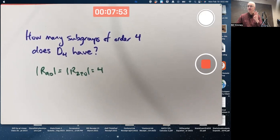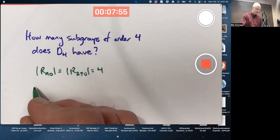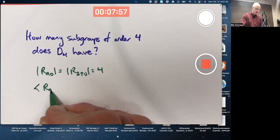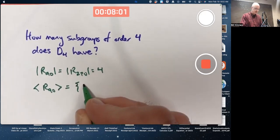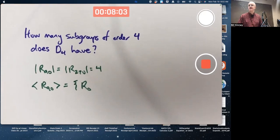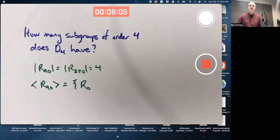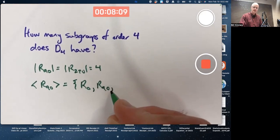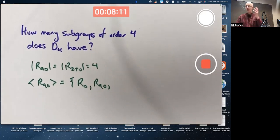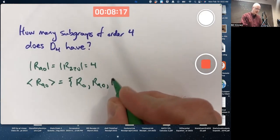The cyclic subgroup generated by R90 includes R0, which effectively is R90 to the 0 power. There's R90 itself. There's R90 squared, meaning compose R90 with itself, meaning do 2 rotations by 90 degrees, giving you R180.